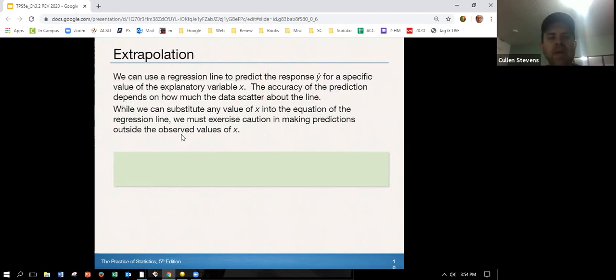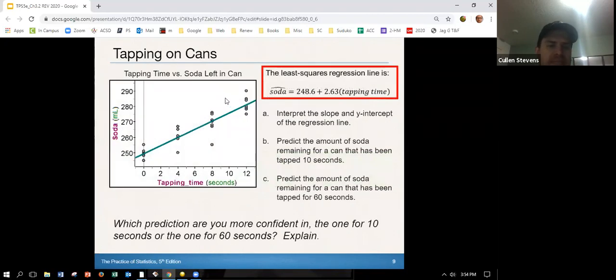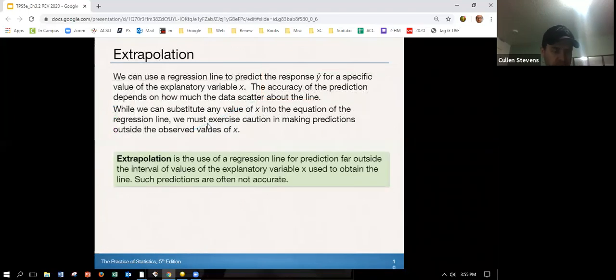When we use a regression line to predict the response y hat for a specific value of the explanatory x, the accuracy of the prediction depends on how much the data scatter about the line. When we can substitute any value of x into the equation of the regression line, we must really exercise caution in making predictions outside the observed values of x. So let me go back here real quick. It's okay that we did 10 here because 10 was in our data set, but going for 60 is way outside our data set. So instead of interpolating looking inside our data set, we're doing extrapolation and that's a lot more dangerous. That's not something we want to do.